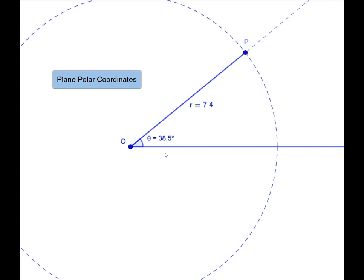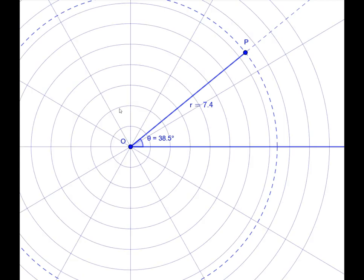The word plane is included because it is a two-dimensional space. Now, similar to what we did before, we can construct a grid that looks like this, which has the coordinate lines for this type of coordinate system.